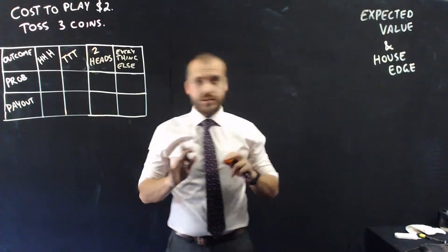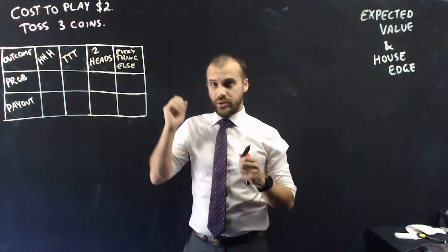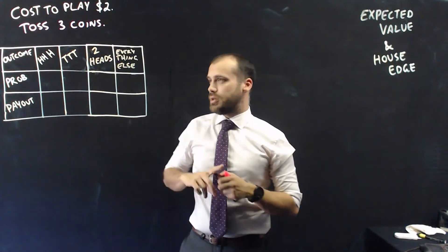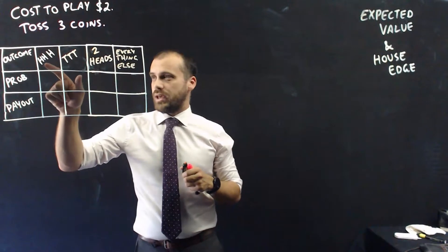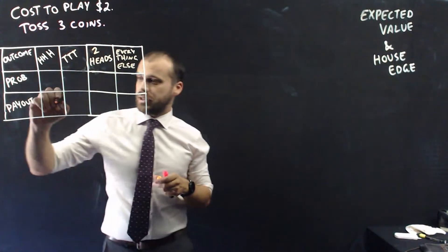Let's look at my new game. So here's the game. It costs $2 to play. I'm going to toss three coins in the air all at the same time. Now, if you get heads, heads, heads come down, I'm going to pay you some money. I'm going to give you $3.